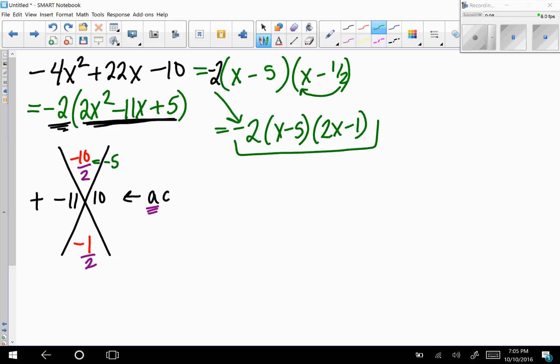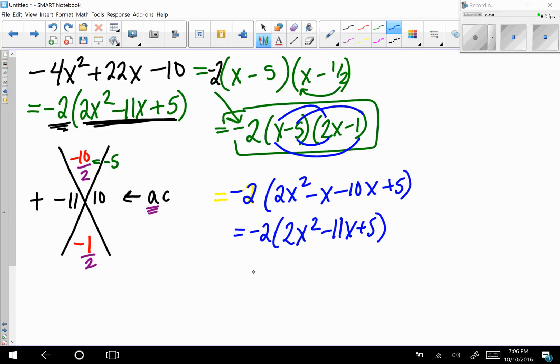So let's check that to make sure that that is accurate. Remember, you want to FOIL first. Let me write this in a different color. I'm going to FOIL first and then probably multiply by negative two. So that should be first or two x squared. Outsides are minus x, insides minus 10 x, and last plus five. So we have negative two times two x squared minus 11 x plus five.